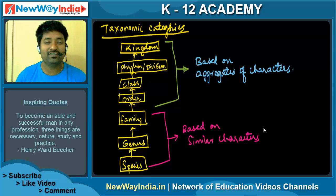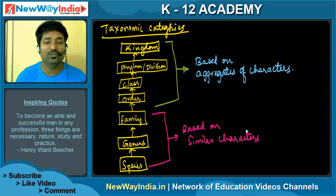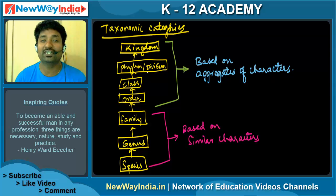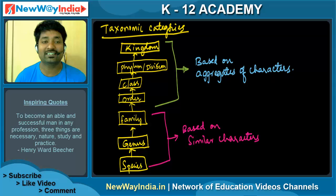In the previous video, we learned about species, genus and family. In this video, we will learn about order, class, phylum, division and kingdom. These are the four taxonomic categories, and we will go into detail about them.